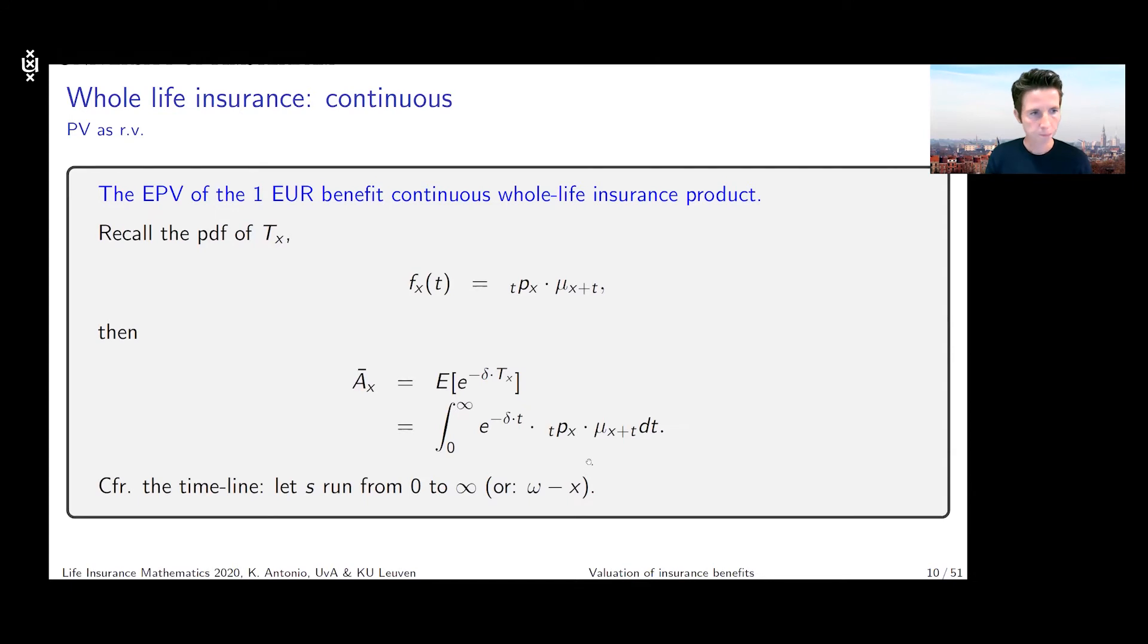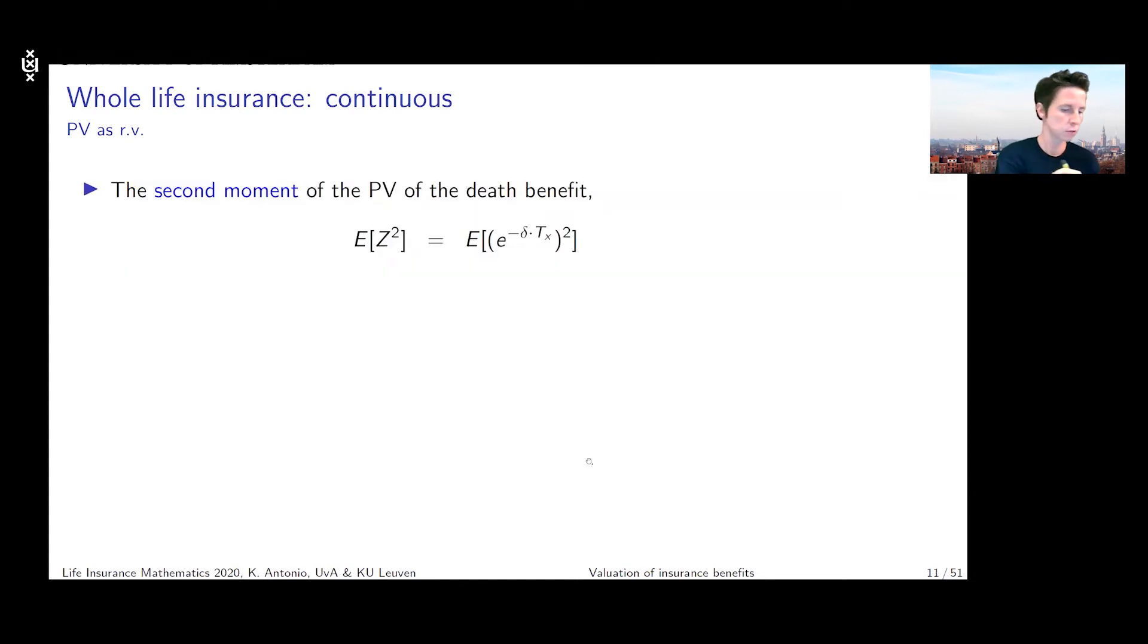If I continue on the next sheet, what we did so far is we looked at one particular moment of our random variable Z. But we can also look at any moment from this distribution of Z that we're interested in, and a particularly interesting one is the second moment. Because combining the first and second moment will allow us to say something about the variance of this Z.